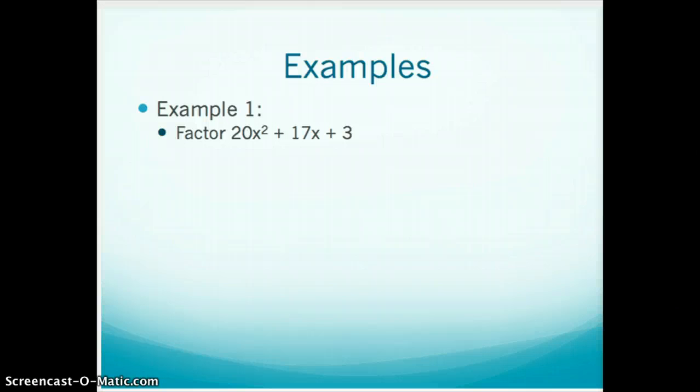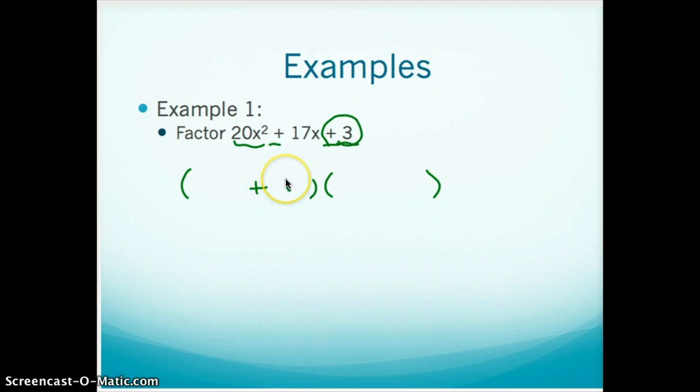I highly recommend looking at this product and this product first, because when you have your two binomials, you know that the last two will have to multiply to equal 3, and that's really nice because it's prime. And because this is positive and this is positive, they can't even be negative and negative. They're going to both have to be positive. So I would usually start right now, we're just going to practice straight guess and checking. We're going to know that it's going to have to end with a plus 1 and a plus 3.